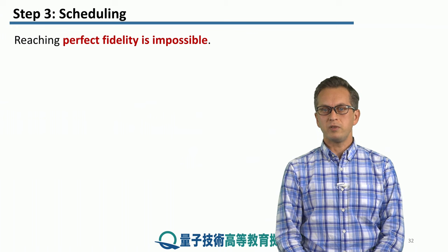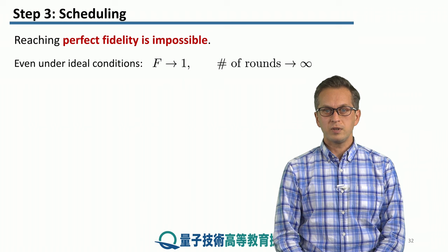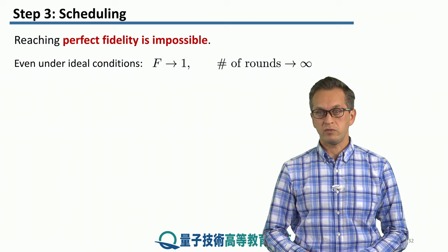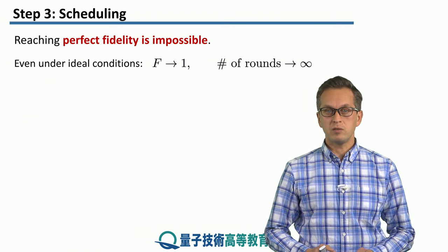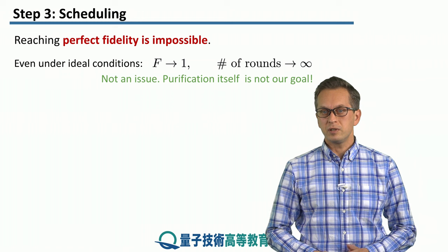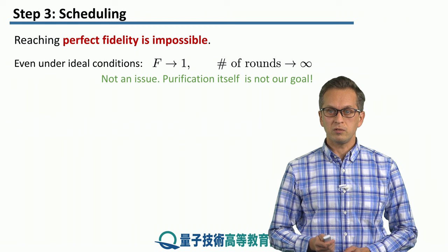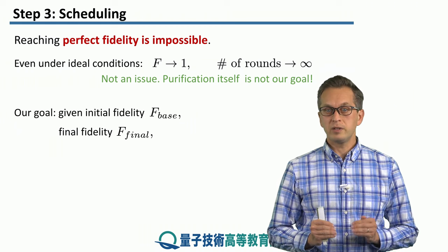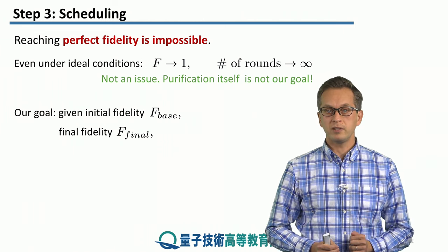What we have to realize about purification is that perfect fidelity is impossible to reach. We say that f approaches unity only if the number of rounds goes to infinity. So we can reach unit fidelity only in the asymptotic limit, and this is only under ideal conditions. This is really not an issue — the fact that we don't reach perfect fidelity — because purification itself is not our goal. Our goal is the following: starting with a given initial fidelity f_base, we want to reach a particular final fidelity f_final.